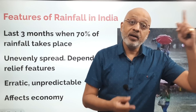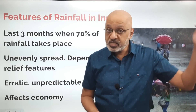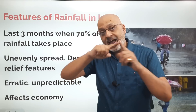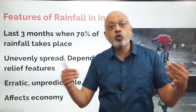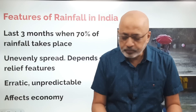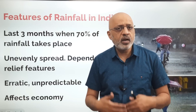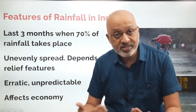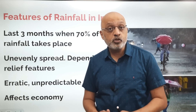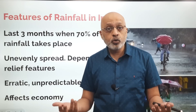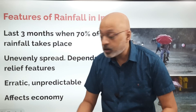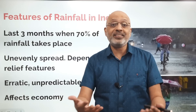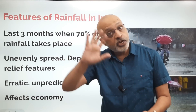Different agro-based industries are all linked to how good the monsoon will be. Companies like Mahindra, Escorts, Ashok Leyland — which manufacture trucks and tractors — along with seed and fertilizer companies, will not do well if the farmer is not buying for his land. So the monsoon becomes very important because India does not have that kind of irrigation infrastructure.